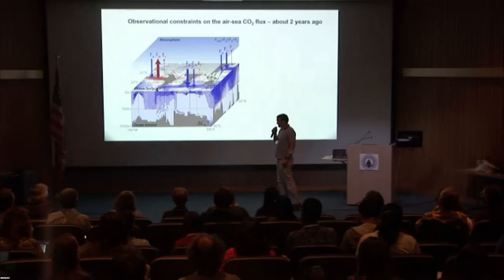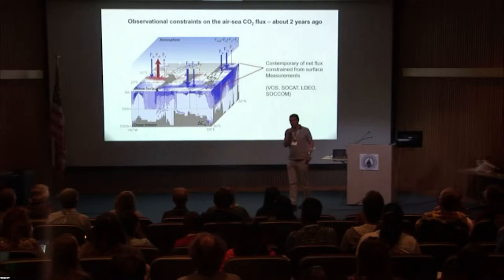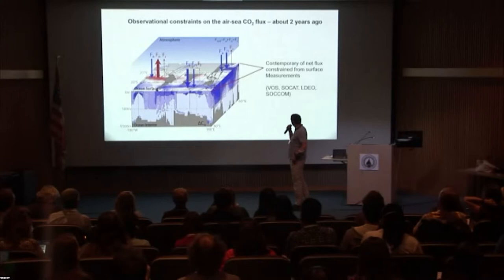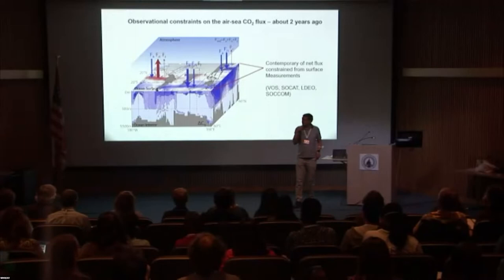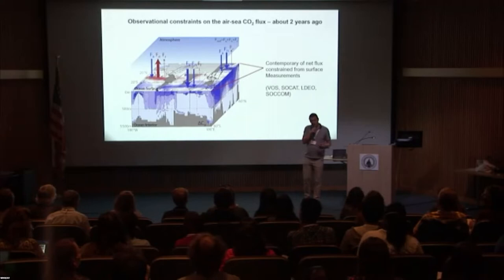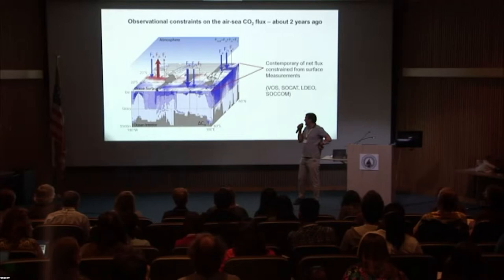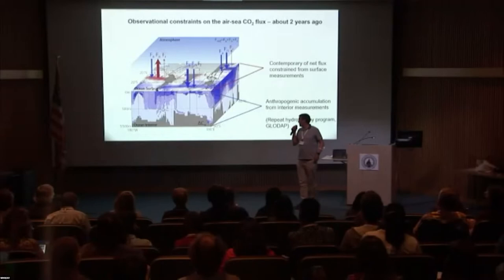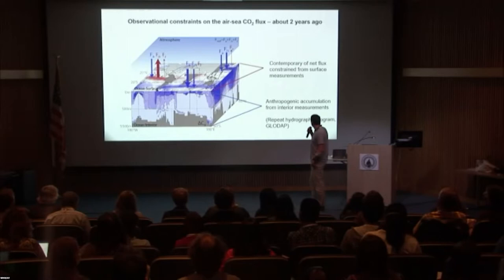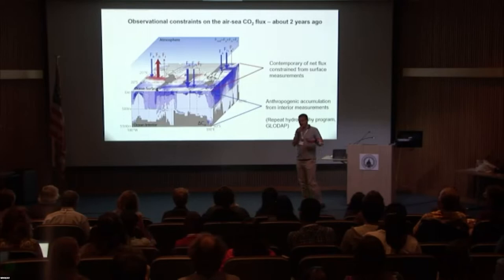Two years ago, we had an entire set of new knowledge coming from surface ocean measurement initiatives — mainly from the VOS lines, but also biogeochemical floats — collected in big databases like the SOCAT database and the LDO database. Based on that new richness of observations, we had a set of new estimates of the air-sea CO2 flux. Likewise, we also had new knowledge stemming from the interior ocean — specifically about the accumulation of anthropogenic carbon, resulting from the repeat hydrography program collecting observations now in the GLODAP database.